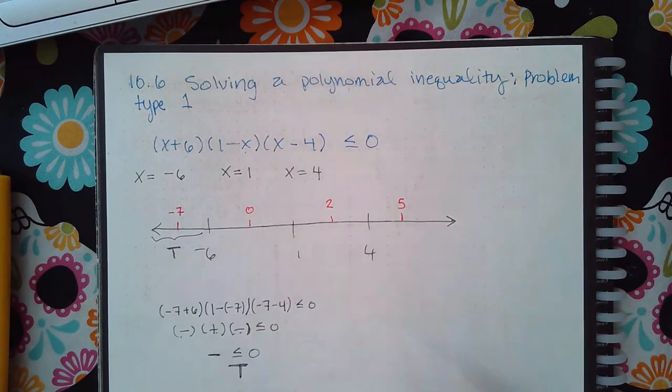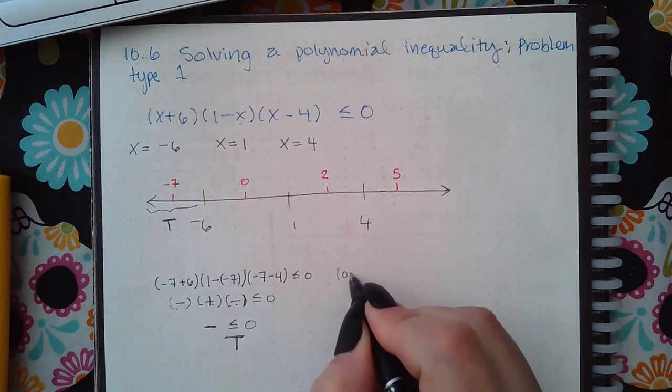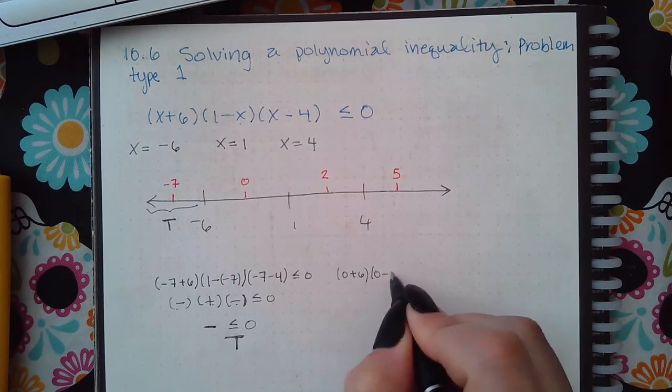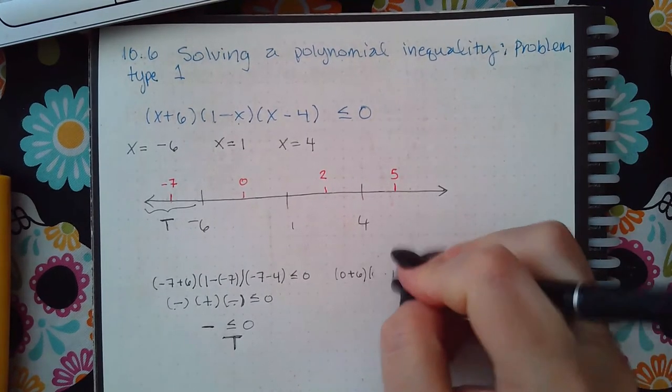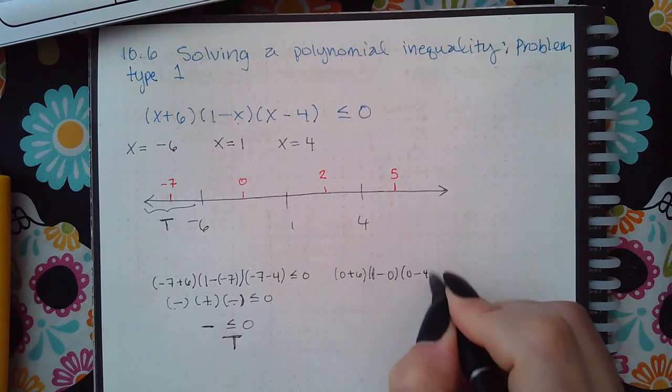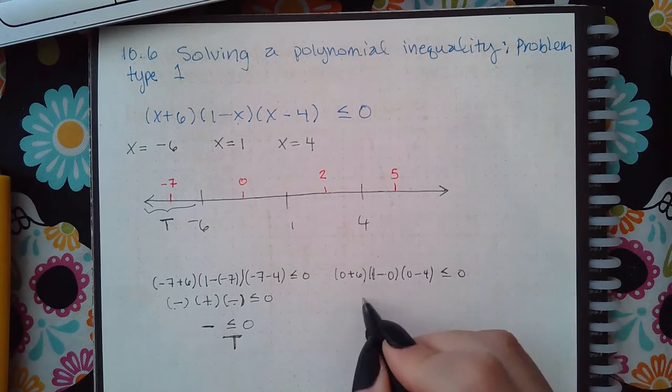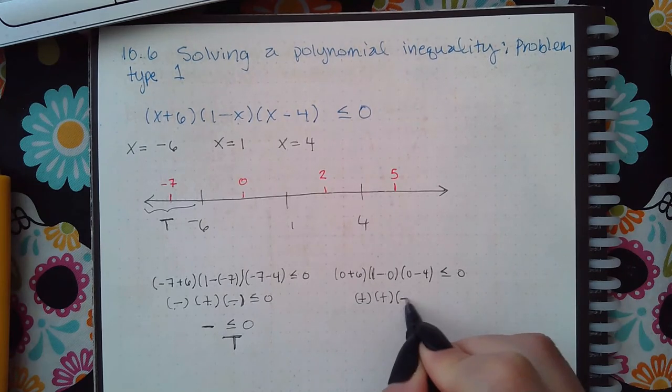Now we're going to test the next number 0, so 0 plus 6, 1 minus 0, and 0 minus 4. So I get a positive here, get a positive here, get a positive here, and I get a negative here.